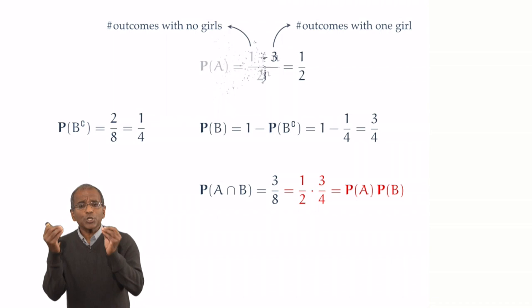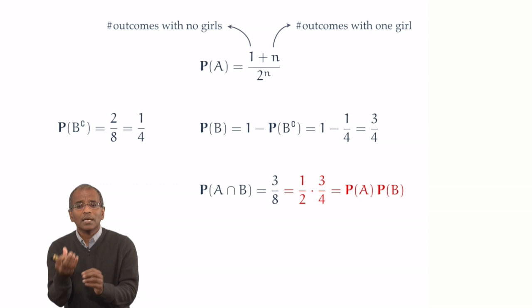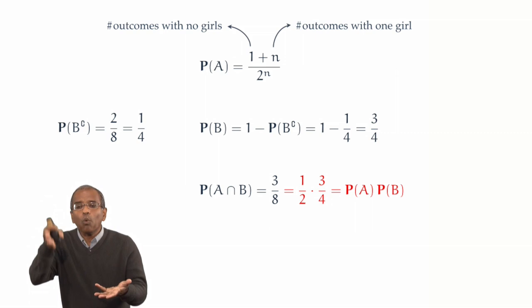it is natural to decompose A, partition it into two pieces. An event, a singleton, consisting of all boys and no girls. And an event consisting of precisely one girl. Now, if it's precisely one girl, that girl, by age, could be in any one of n locations. And therefore, the probability of the second event is going to be n over 2 to the n. Additivity brings home everything else. So the probability of A is 1 plus n over 2 to the n.